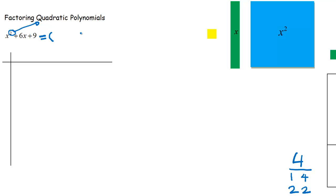The answer is going to look like something times something. A quadratic means you'll see a squared term in the problem, and polynomial means the problem has many terms. In my last video I did multiplying polynomials, so now I'm going to undo multiplying. I want to think about undoing x squared plus six x plus nine.